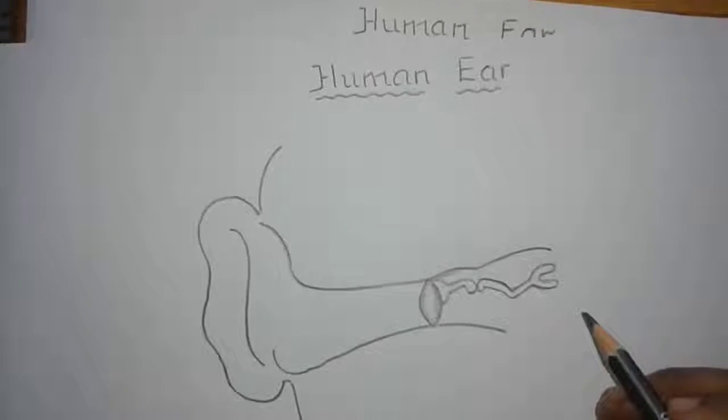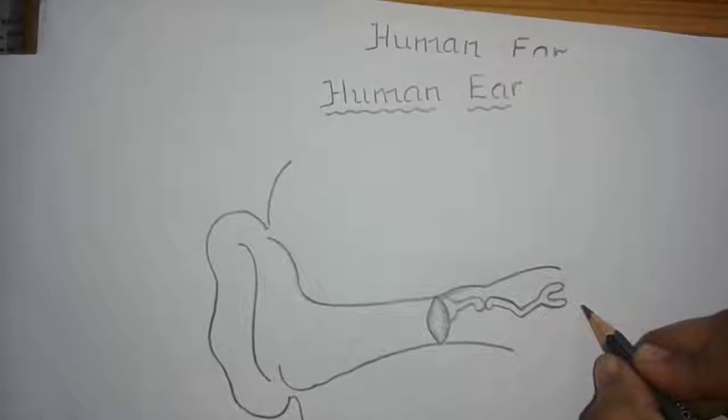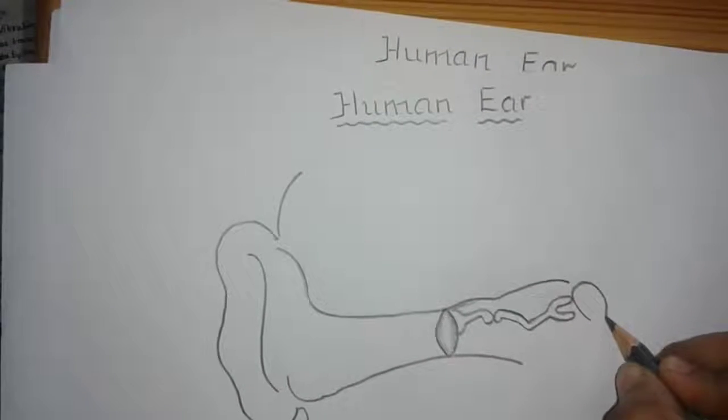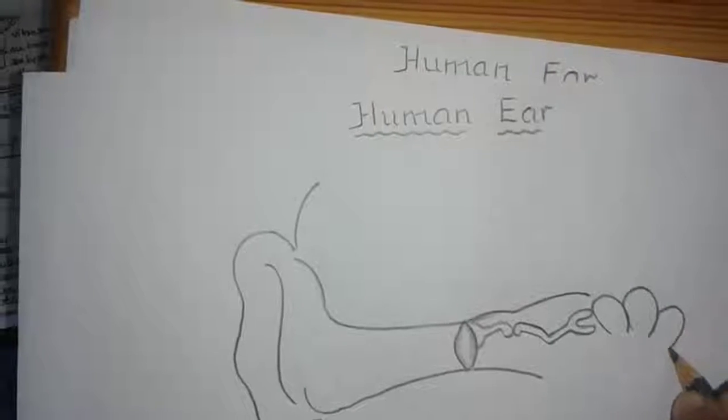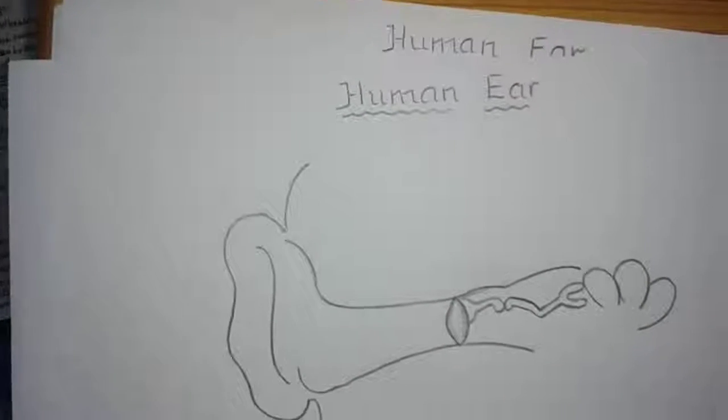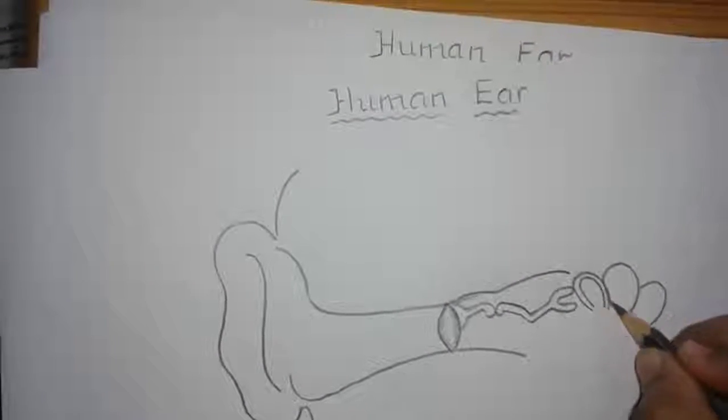Now the third part of the ear is inner ear. The inner ear consists of upper part called utriculus. This utriculus consists of three semicircular canals. Draw the three semicircular canals like this.